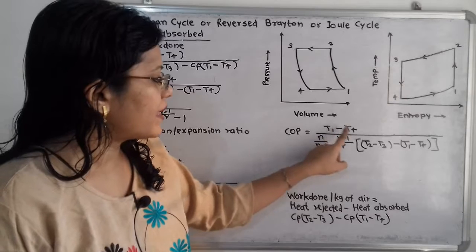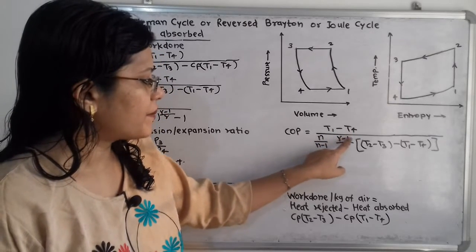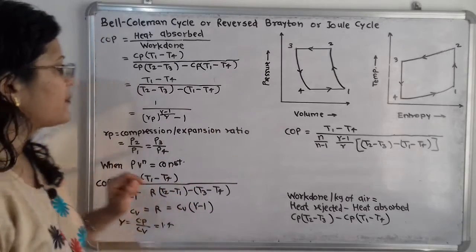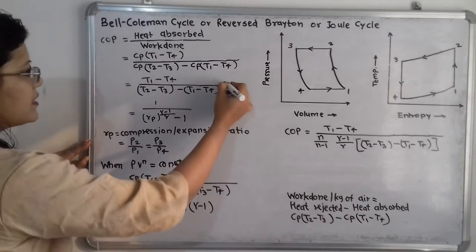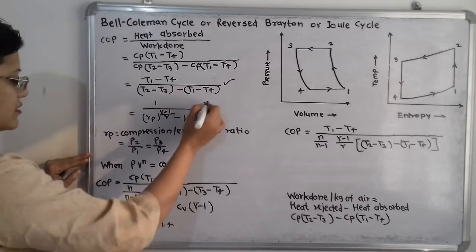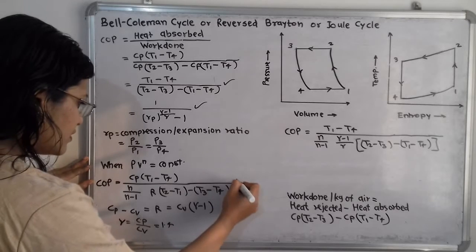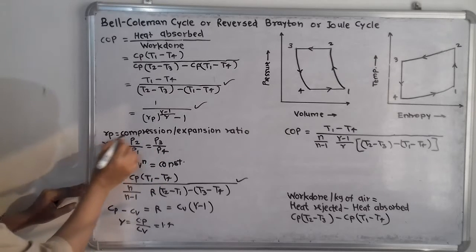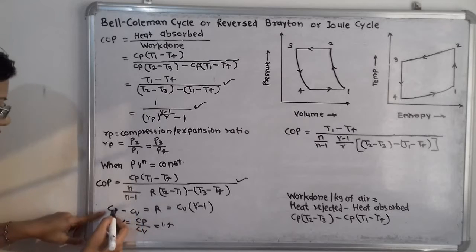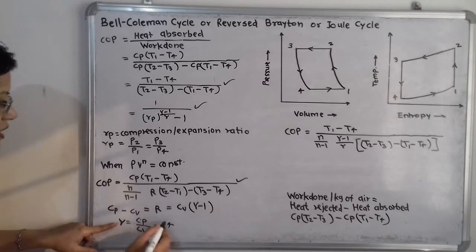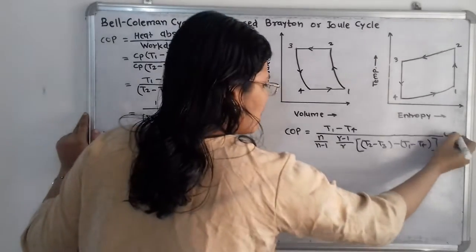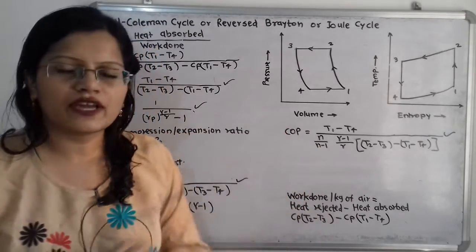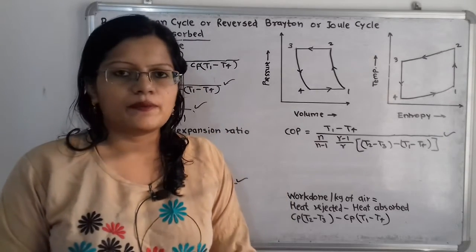The COP can also be expressed as: (T1 − T4) divided by [(N−1)/(γ−1)/γ × (T2 − T3 − (T1 − T4))]. These formulas — the simplified COP in terms of Rp and γ, the COP in terms of N and R, the pressure ratio Rp, and the values of R and γ — are the four important formulas for calculating the coefficient of performance and solving problems related to the Bell-Coleman cycle.